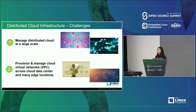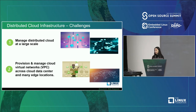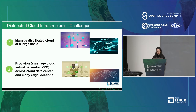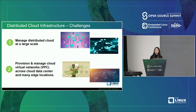Here are some of the challenges we see in today's cloud environment. The first challenge is managing distributed cloud at a large scale. When we move from centralized to distributed cloud, we need to manage not just a few large data centers, but also smaller remote edge clusters. Our cloud infrastructure needs to be redesigned and optimized to manage compute resources running at the edge, closer to customers. We also need to provision and manage cloud virtual networks such as VPC, subnet routing rules, security rules, across data centers and many edge locations.